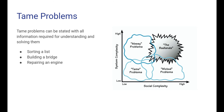The opposite of wicked problems are tame problems. These are problems that can be stated with all the information needed for understanding and solving them, and you know when you have completely solved them — it is actually possible to solve them. For example, sorting a list, building a bridge, or repairing an engine. These are problems that are much easier to address, to solve, and to know when you have solved them.